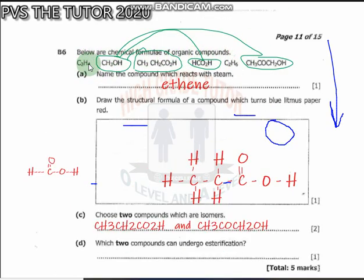Below are chemical formulas of organic compounds. Name the compound which reacts with steam - this is ethene. It's an alkene that can react with steam in the formation of alcohols. Remember, the general formula for alkenes is CₙH₂ₙ. If you have two carbon atoms, you have four hydrogens and two carbons, which gives you C₂H₄.